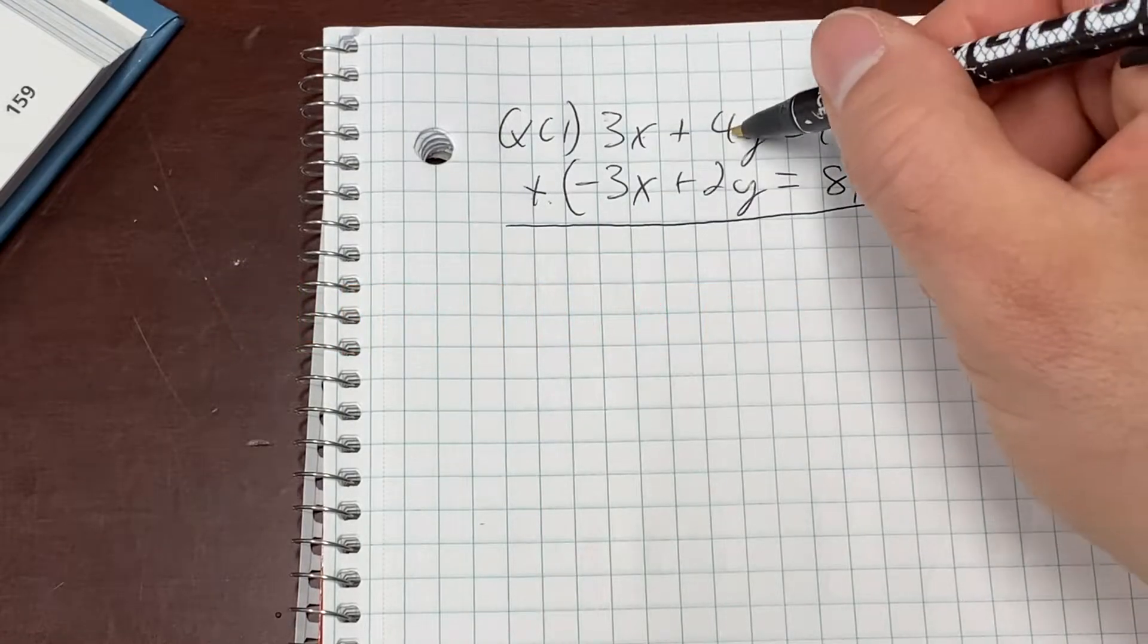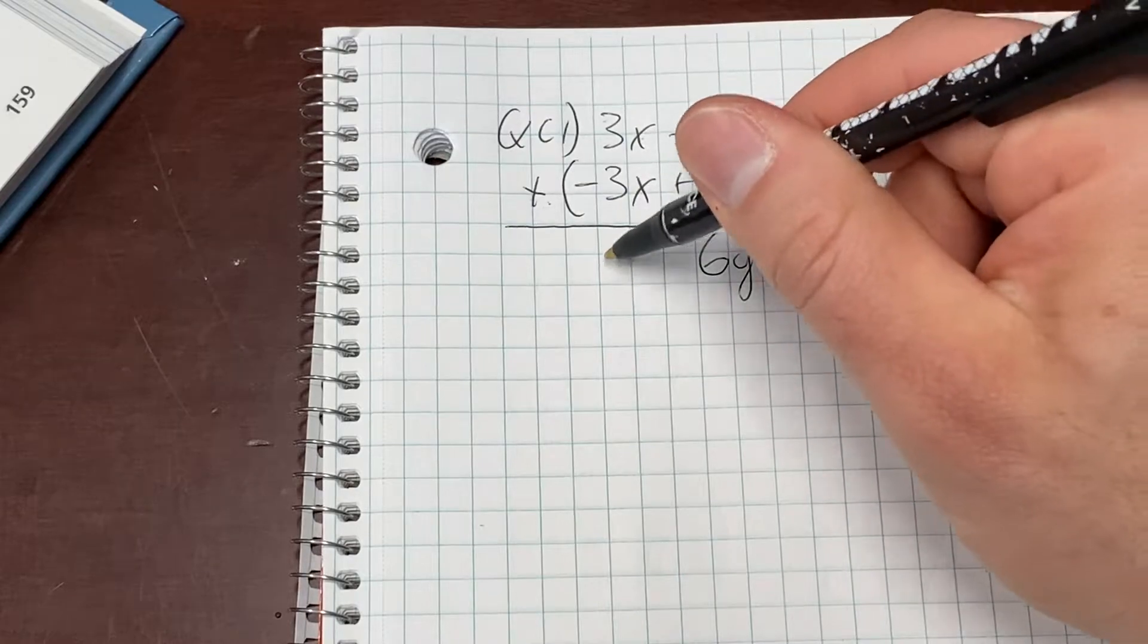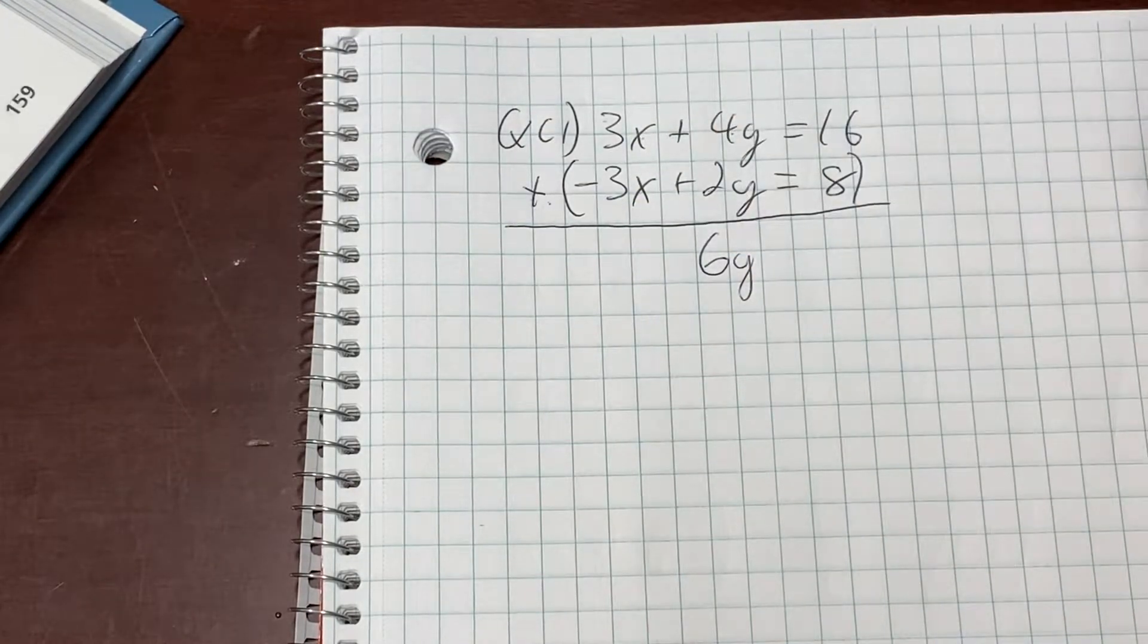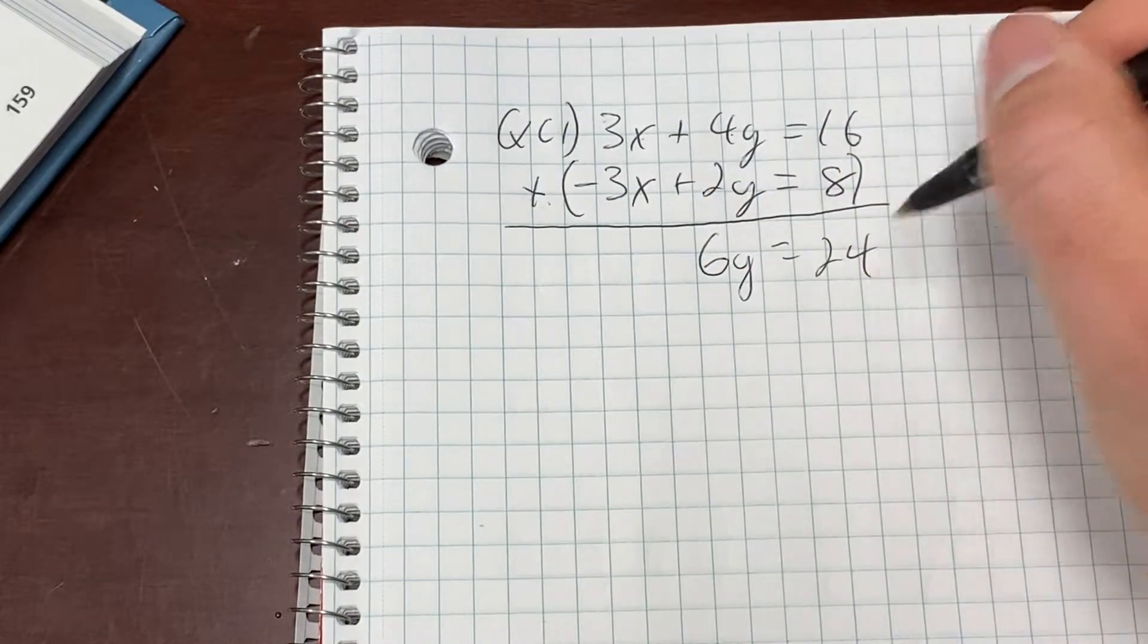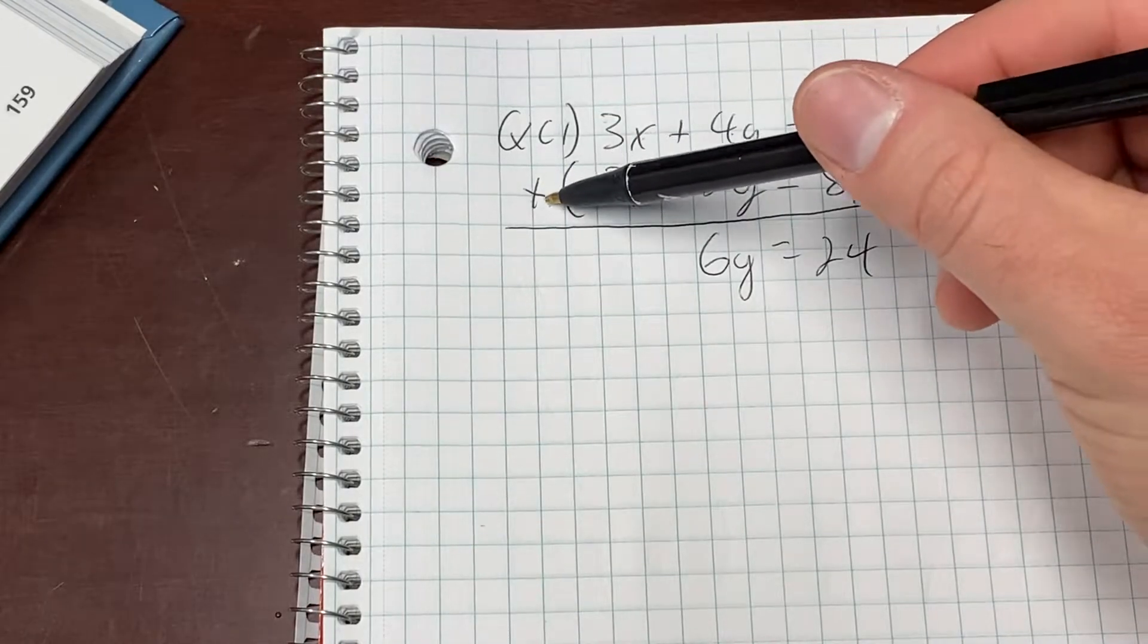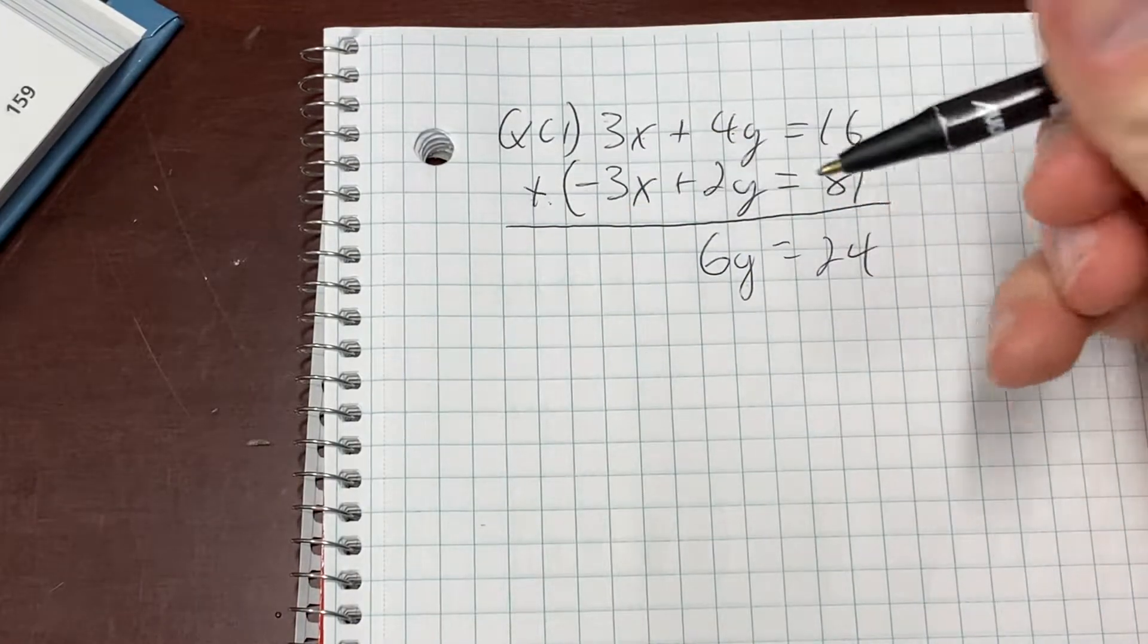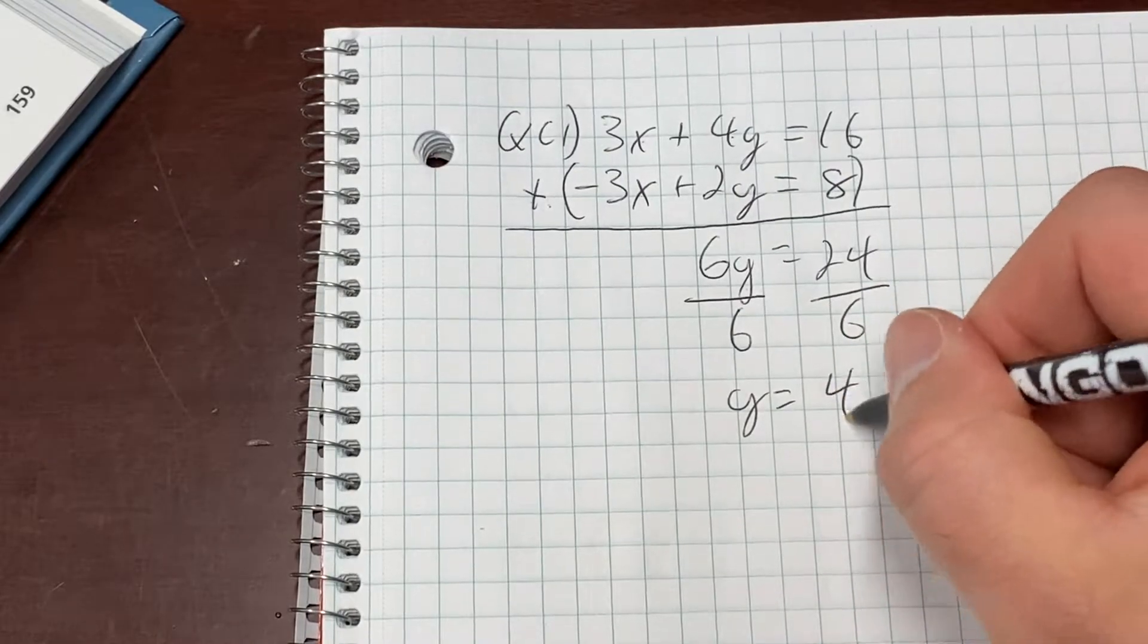We are going to add because we want to get zero. I like to use parentheses just as a visual cue to know I'm adding the entire thing. 3X plus negative 3X eliminates. It's gone. It's zero. That's the whole reason we're doing this - to eliminate. Four plus two is six Y. Notice I'm not writing the zero here because I don't have to. 16 plus 8 is 24.